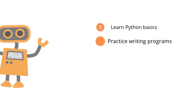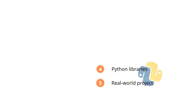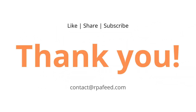So those are the five steps — a five-step process you can follow. Just to recap quickly: learn the basics, practice writing your programs, move towards advanced topics once you're comfortable with those two, then get familiar with Python libraries commonly used in automation, and finally do some real-world projects where you inject Python code alongside your RPA solution to solve a use case.